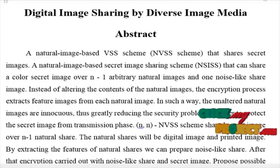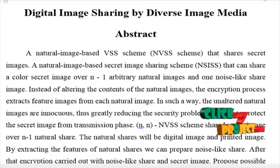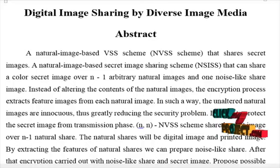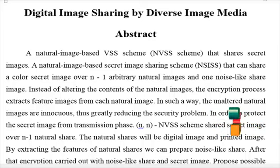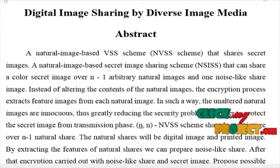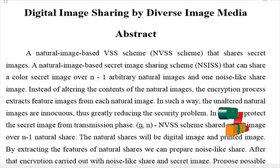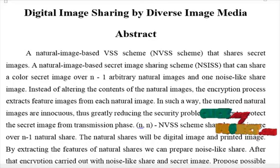Instead of altering the contents of the natural images, the encryption process extracts feature images from each natural image. In this way, the unaltered natural images are kept intact, thus greatly reducing the security problem. In order to protect the secret image from the transmission phase, an N,N NVS scheme is used.